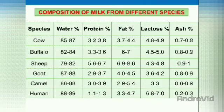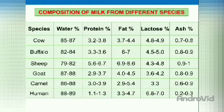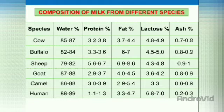Then the next species is goat. In goat's milk, the water percentage is 87 to 88%, protein 2.9 to 3.7%, fat 4.0 to 4.5%, lactose 3.6%, and ash 0.8 to 0.9%. Goat's milk has nutritional value and also medicinal value.